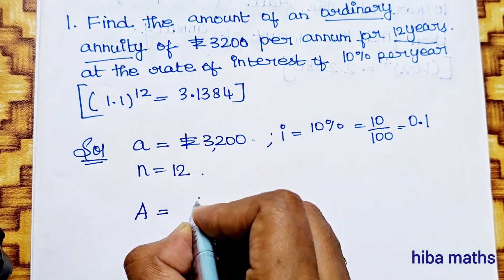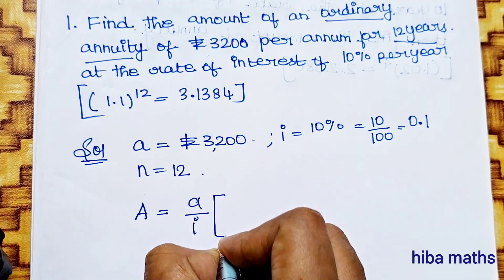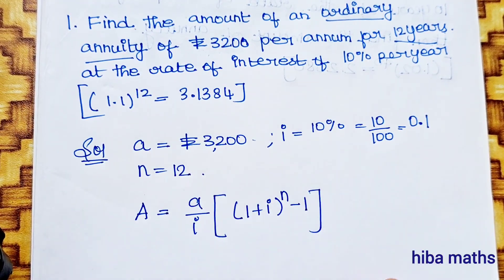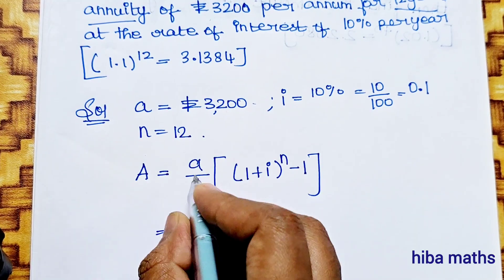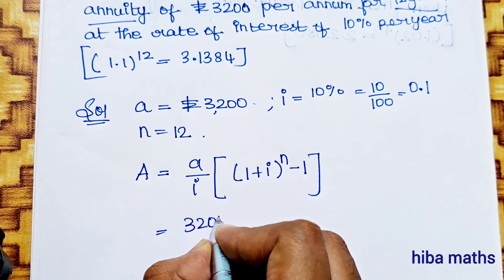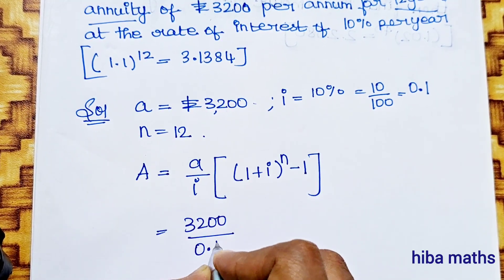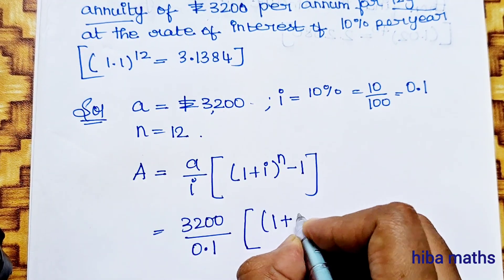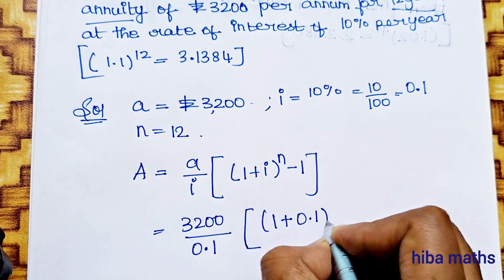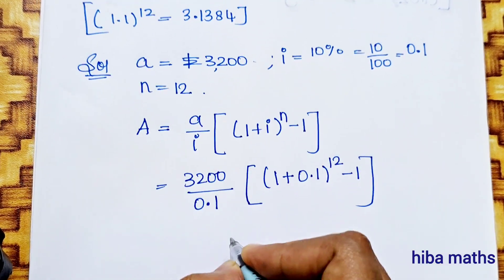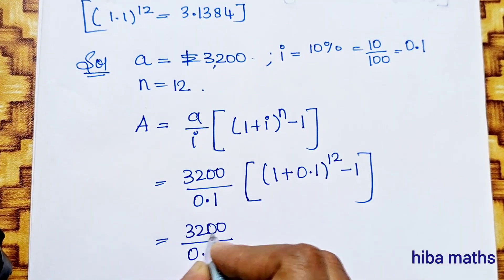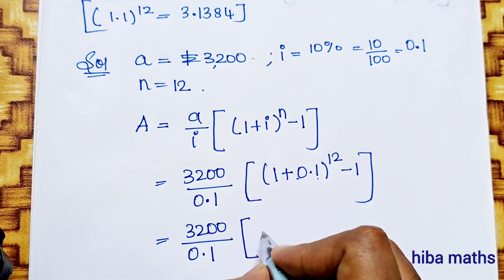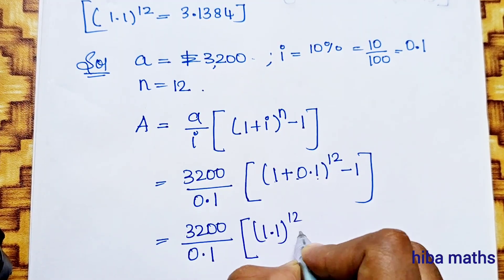Using the formula: A equals a by i, times (1 plus i) to the power n minus 1. Substituting: a equals 3200, i equals 0.1, n equals 12. So we have 3200 divided by 0.1, times (1 plus 0.1) to the power 12, minus 1. That is 1.1 to the power 12, minus 1.